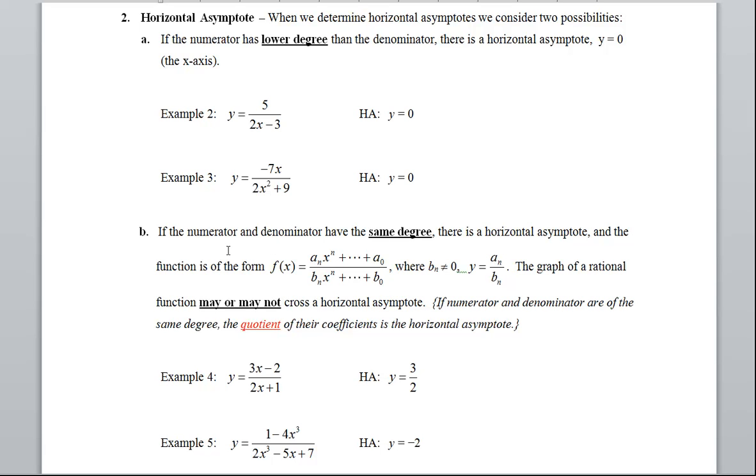The third situation that you're not going to be responsible for is if the degree in the numerator is larger than the denominator. It's not a horizontal asymptote anymore. It's called an oblique and an oblique is slanted. So there might be some problems that you have to graph in the homework.